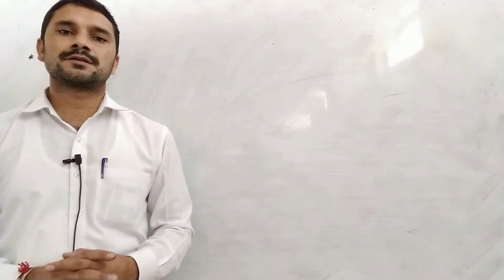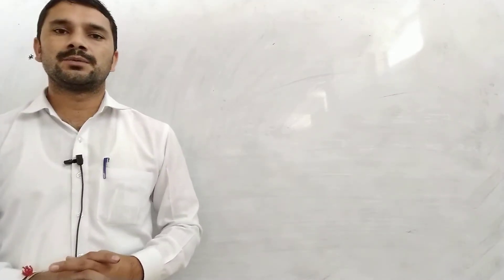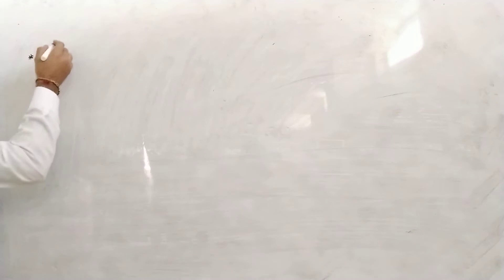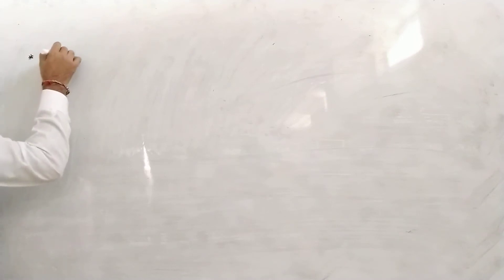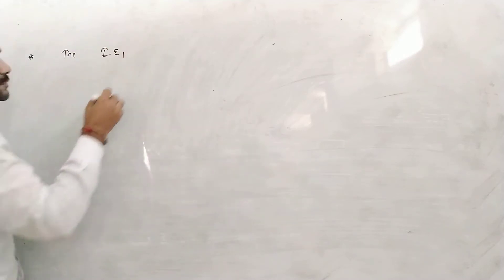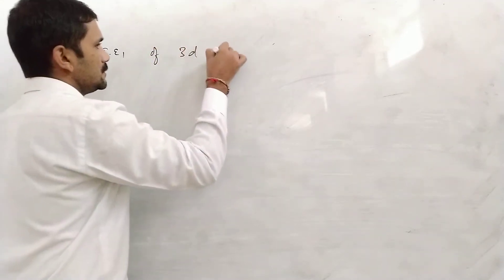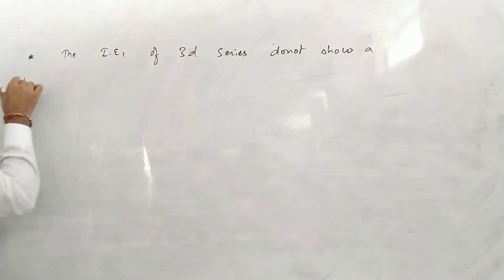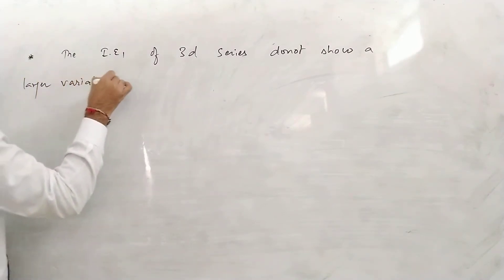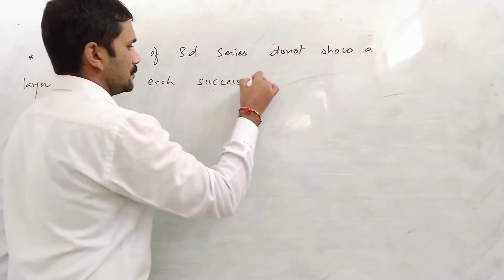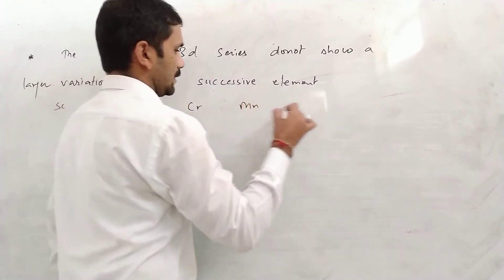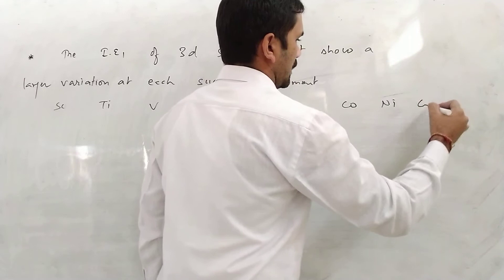Hello students. In the last lecture we were discussing atomic properties of d-block elements, and the last property we were discussing was ionization energy. Some more points are left about ionization energy, so let us cover them. The first point is that if we look at the ionization energy values of the first series, the first ionization energy of the 3D series does not show a large variation at each successive element. In the first transition series, when you remove the first electron, there is no significant difference in the ionization energy.